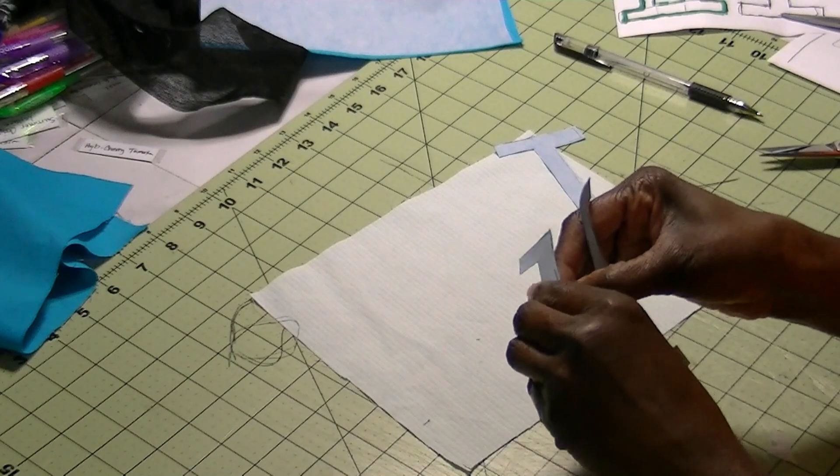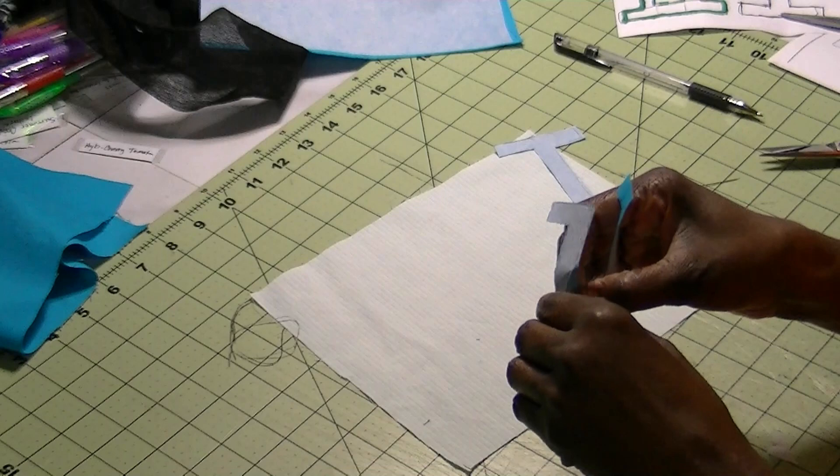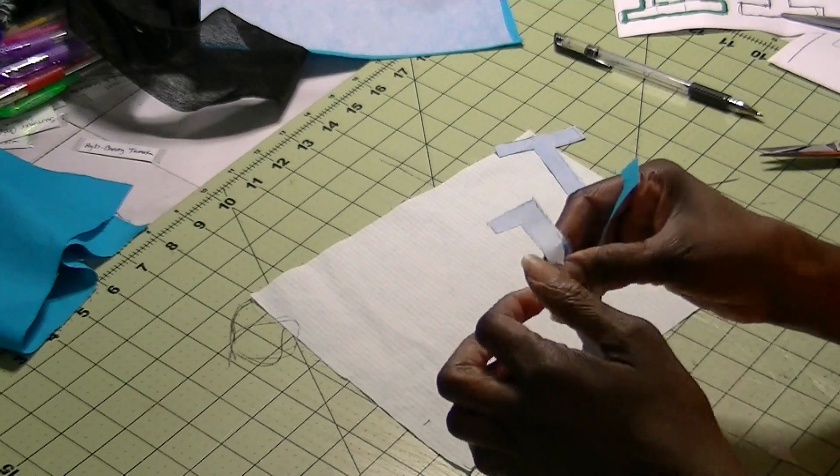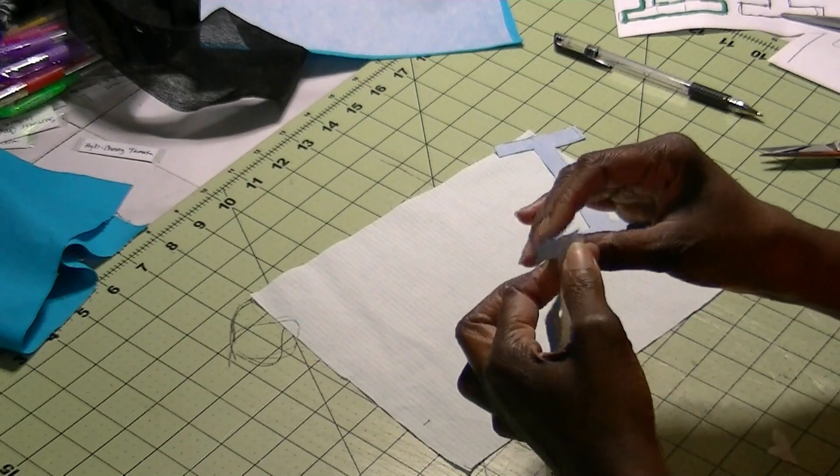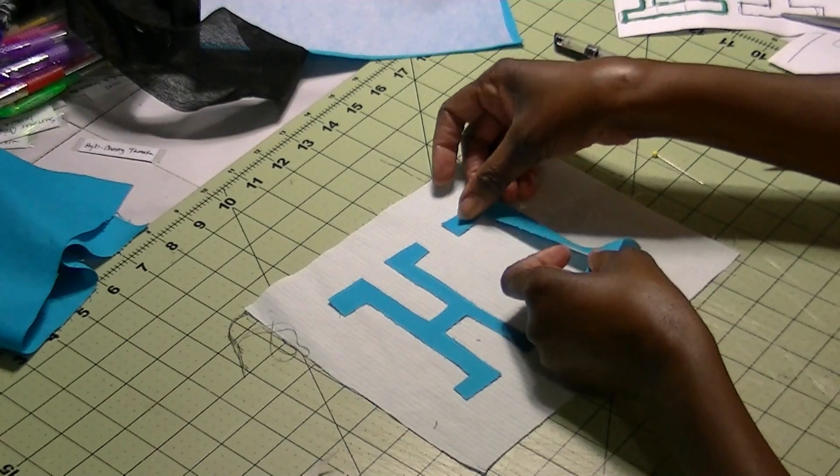And it should peel off. If you ironed it down correctly, it should peel off easily. So now we'll put the I down.